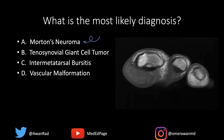Is this a Morton's neuroma, a tenosynovial giant cell tumor, intermetatarsal bursitis, or a vascular malformation? What's the most likely diagnosis?